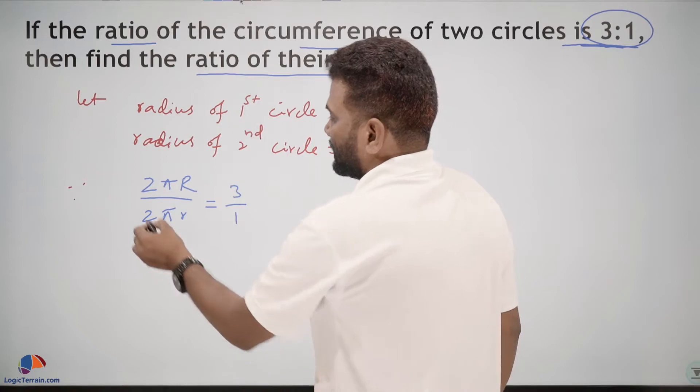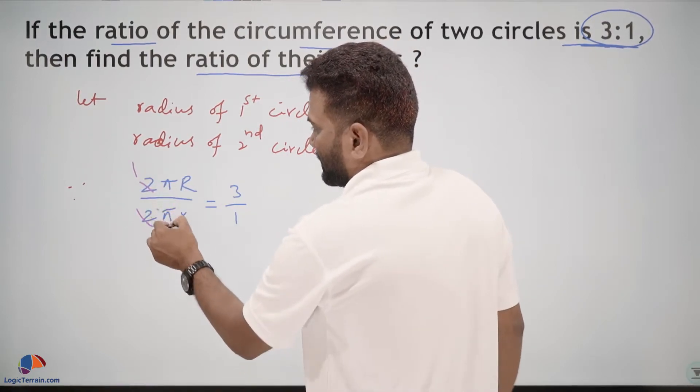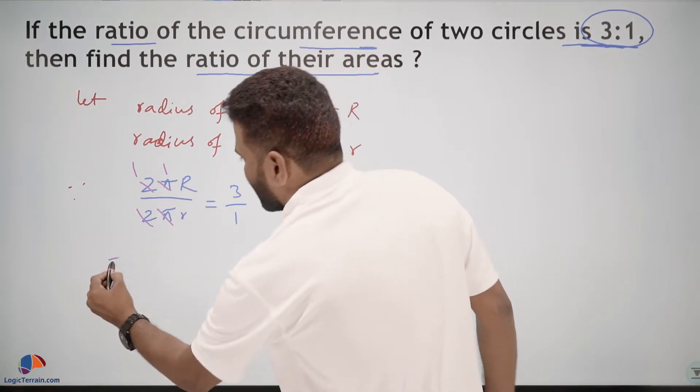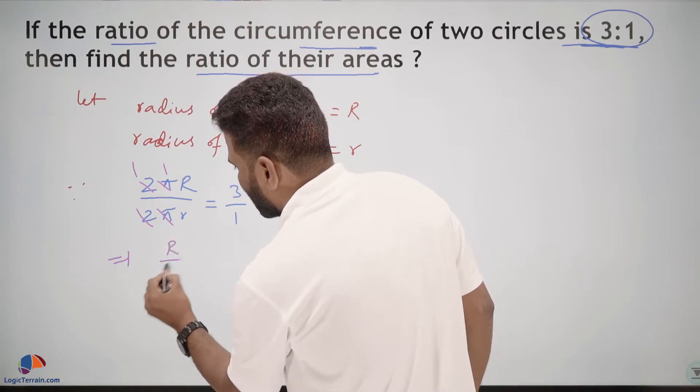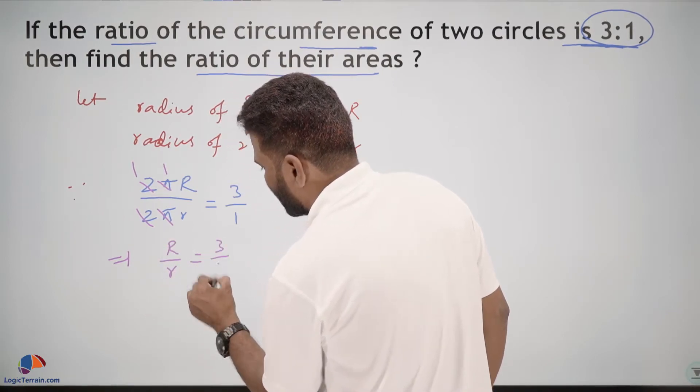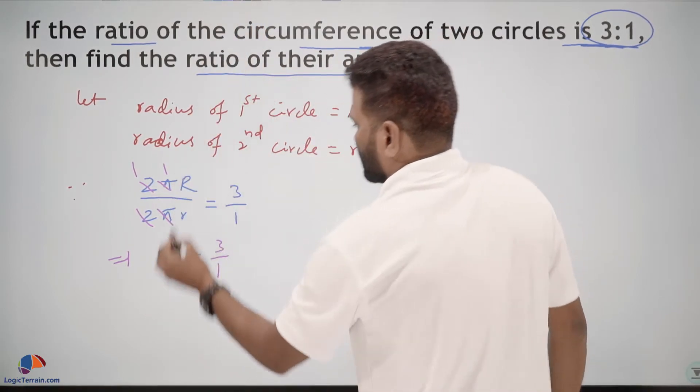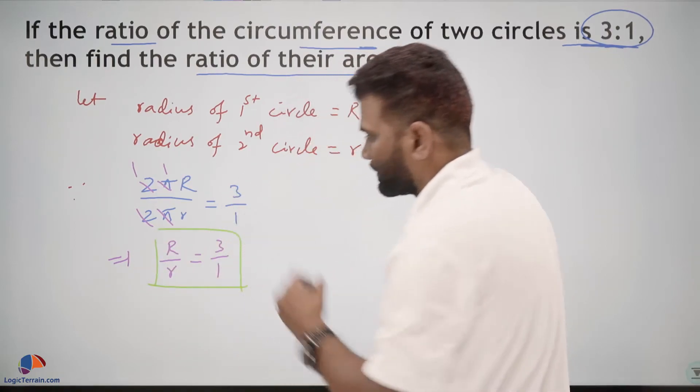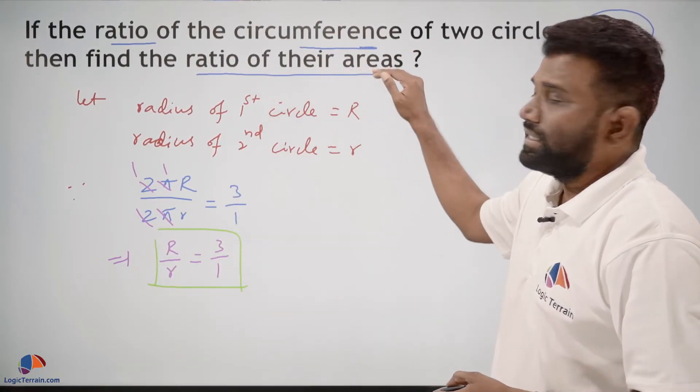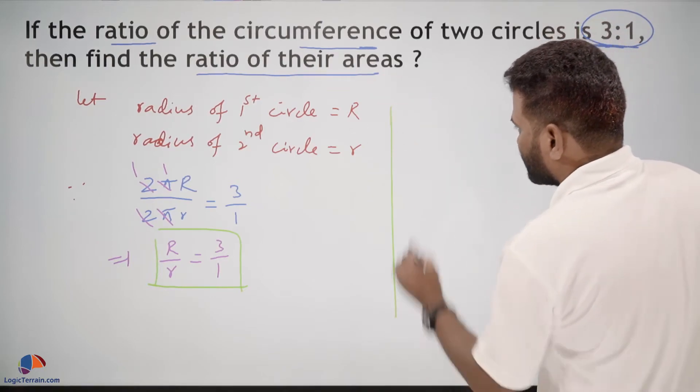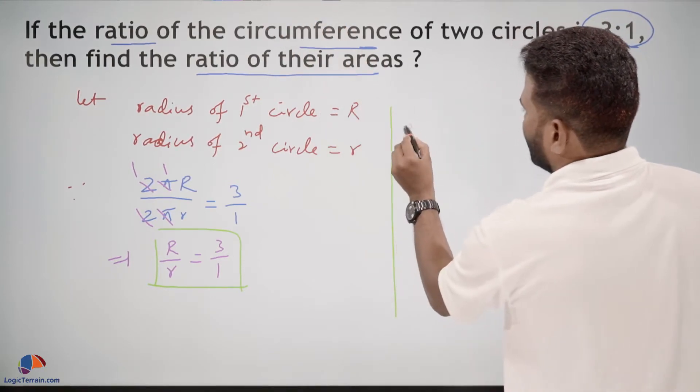Further we can simplify: 2 gets cancelled, π gets cancelled, then we get capital R upon r equals 3 upon 1. So we got a relation. Now ratio of their areas.